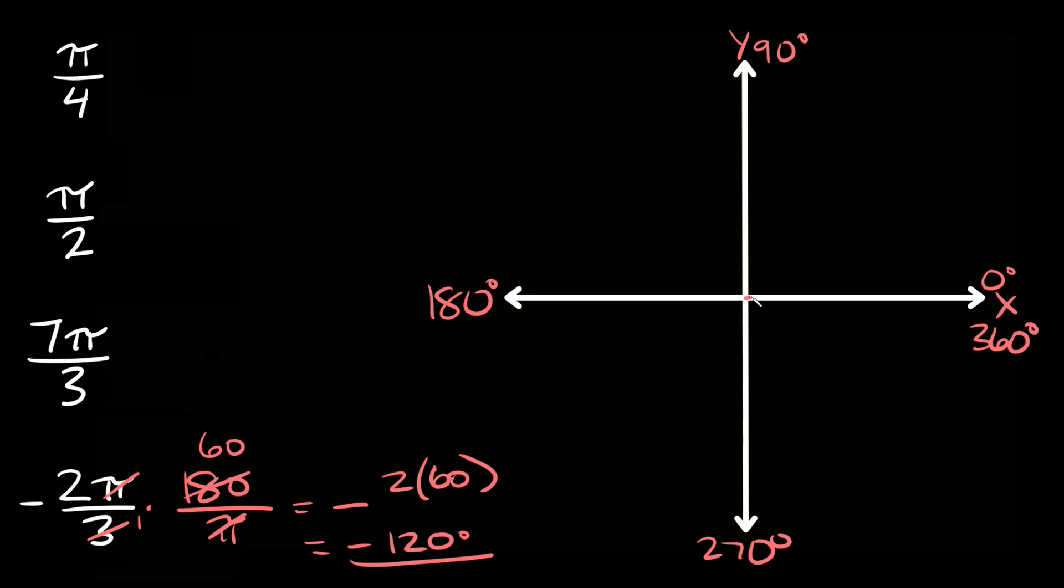So this time we're going to start with our initial arm right here and we're going to rotate in the negative direction. 120 degrees. So first of all this is 90 degrees and then we're going to go another 30 degrees.